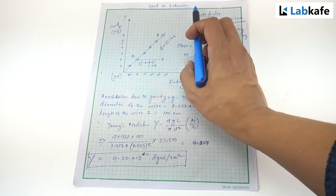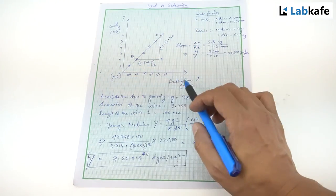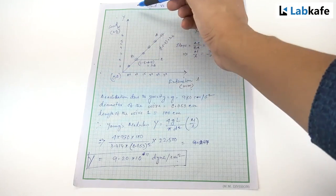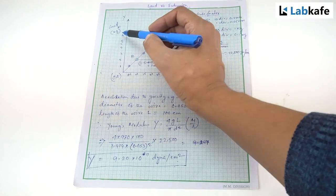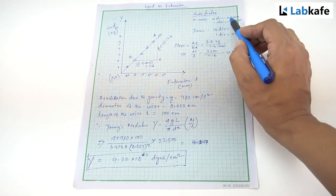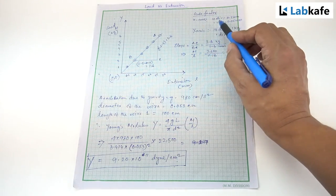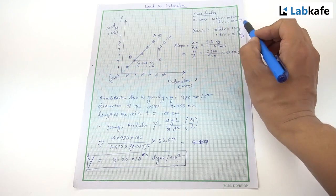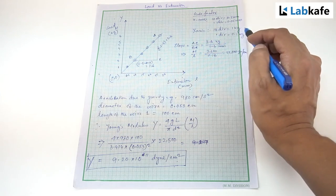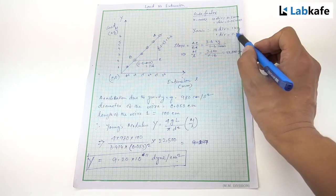I have plotted load versus extension graph. On x-axis, I have plotted extension in millimeter. On y-axis, I have plotted load in kilogram. The scale factor for the graph on x-axis is 10 divisions equals 0.5 mm, 1 division equals 0.05 mm. And on y-axis, 10 divisions equals 1 kg, 1 division equals 0.1 kg.